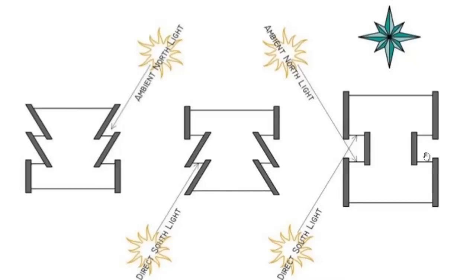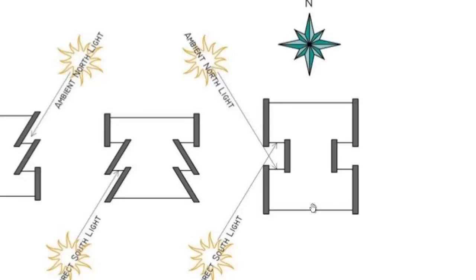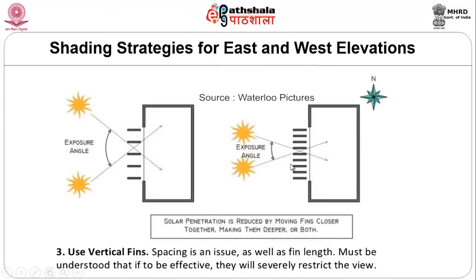If you completely avoid windows on the east and west, your daylight is cut out, and what you save by not bringing in heat you will spend on an electricity bill for lights. The solution is to have ambient north light coming in to daylight the space without heat gain, and direct south light which is very good. To use vertical fins as shading, spacing and fin length are issues, and if they have to be effective, they will severely restrict the view — but solar penetration is reduced by moving fins closer and making them deeper.